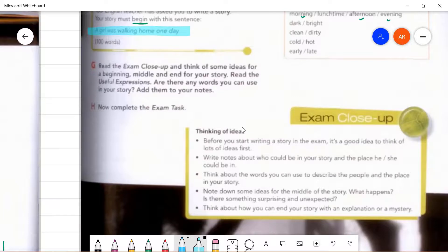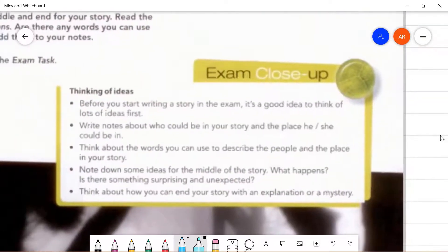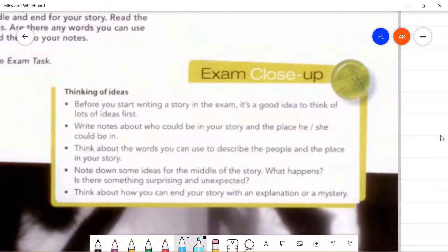Read the exam close up and think of some ideas for a beginning, middle and end for your story. Read the useful expressions. Are there any words you can use in your story? Add them to your notes. Now let's look at the exam close up box. Let's read together.